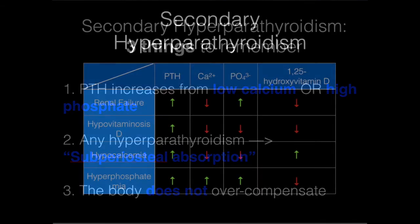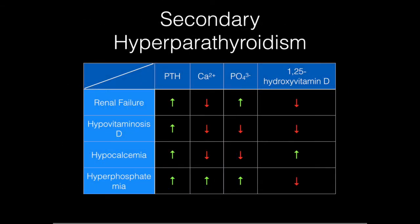Alright, so let's take a look at this table. I'm pretty sure I've got all the possible calcium-phosphate derangements worth discussing here, so we'll walk through them. And of course, all of these are going to have elevated PTH in the first column because that's obviously what we're discussing.